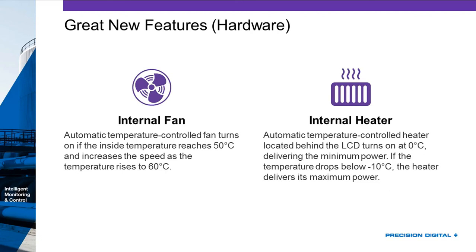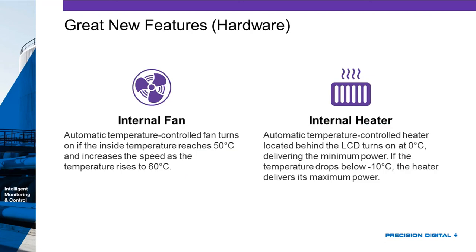Lastly on the new features list, we've got an internal fan which turns on whenever it reaches 50 degrees C — it helps circulate air inside the unit and in the cabinet. The fan slowly increases speed as temperature rises to 60 degrees C. On the flip side, we've got an internal heater which turns on at zero degrees C, max start at minus 10. You don't have to think about any of these — the internal heater helps it work down to minus 40 C for all of you in northern climates. When you turn one on and hear a noise, you'll know the fan is turning on because it's particularly hot.